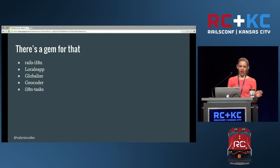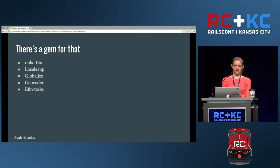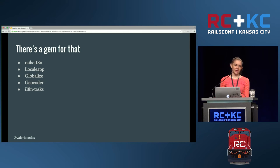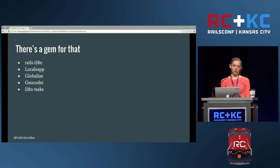Here are some helpful gems in your localization journey. One is Rails I18N, which provides tons of translations in different languages and locales for errors baked into Rails, Active Record things, default date formatting, and similar things — so you don't have to waste time doing those yourself. Locale App is a gem that provides a web interface for storing translations that translators can log into.